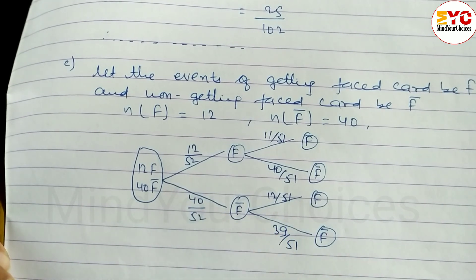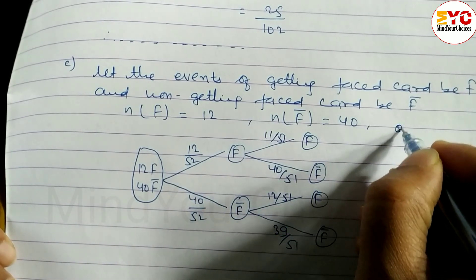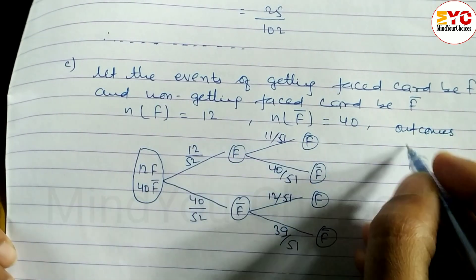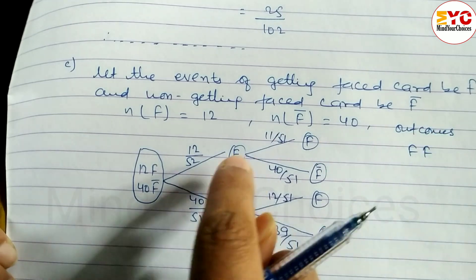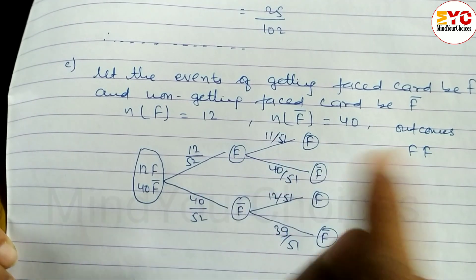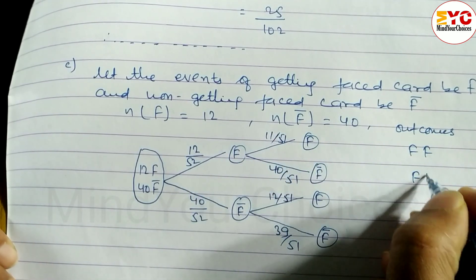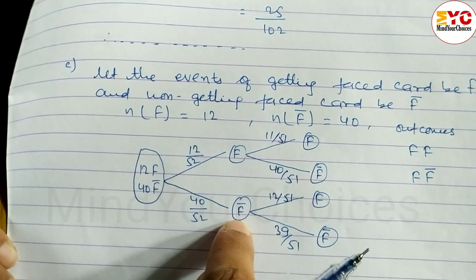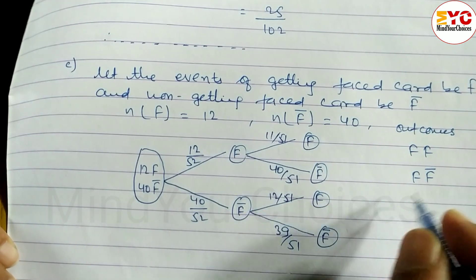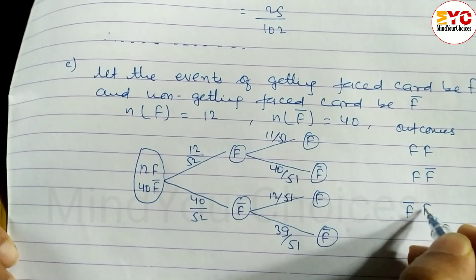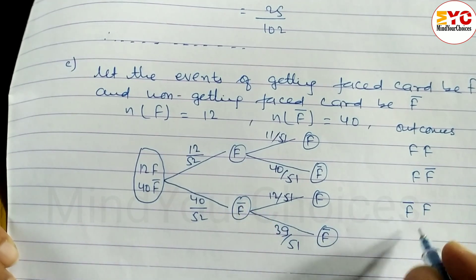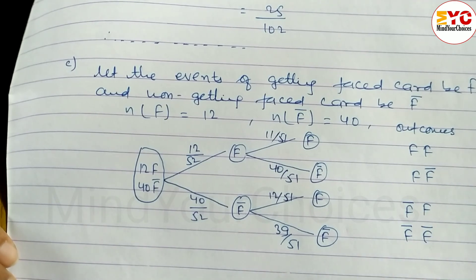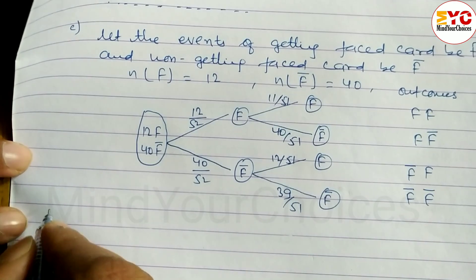So the possible outcomes are: face card and face card (F, F); face card and non-face card (F, F'); non-face card and face card (F', F); and non-face card and non-face card (F', F'). These are all four outcomes.